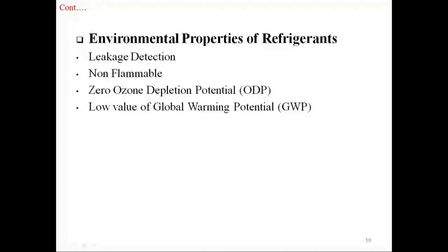Environmental properties of refrigerants. In case of leakage, refrigerants should be easily detected; otherwise strong-smelling chemicals may be added. Refrigerants should be non-flammable. Refrigerants should have a zero value of ODP (ozone depletion potential). The ODP of a refrigerant is the relative amount of depletion to the ozone layer it can cause; ODP of R11 is fixed at a maximum value of 1. Refrigerants should have a low value of GWP (global warming potential). GWP is the relative measure of how much heat a refrigerant traps in the atmosphere. GWP of carbon dioxide is 1.